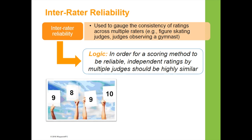In a figure skating competition example, four judges gave scores of 9, 8, 9, and 10. Assuming a scale of 1 to 10, this performer did an outstanding job. What we're looking for is not necessarily high or low scores, but consistency across the judges. Scores of 9, 8, 9, and 10 are fairly consistent, so we would expect high inter-rater reliability here.